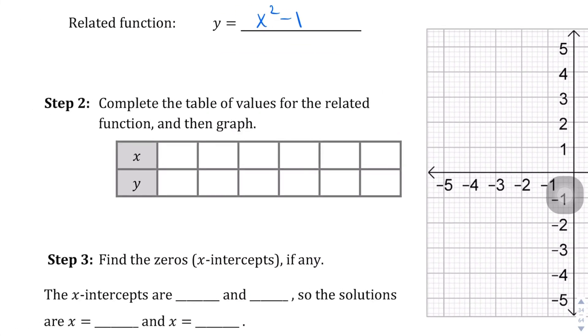Let's fill out this table for step 2. We're going to use the standard points: negative 2, negative 1, 0, 1, and 2. Let's go all the way to 3 for this one. We're going to plug this in. Negative 2 squared is 4, 4 minus 1 is 3. Negative 1 squared is 1, 1 minus 1 is 0. 0 squared is 0, 0 minus 1 is negative 1. And then it's symmetrical, right? So we get 0, 3, and then with 3, 3 squared is 9, 9 minus 1 is 8.